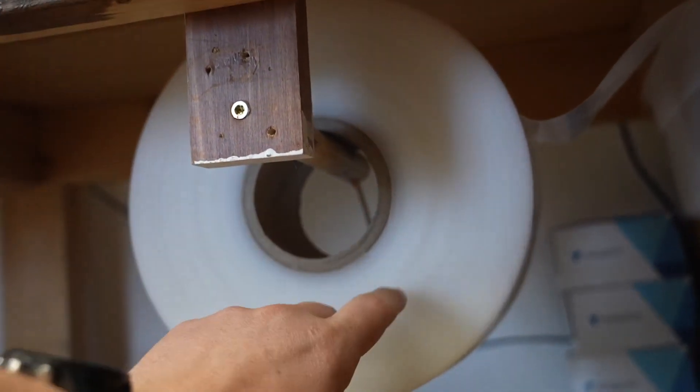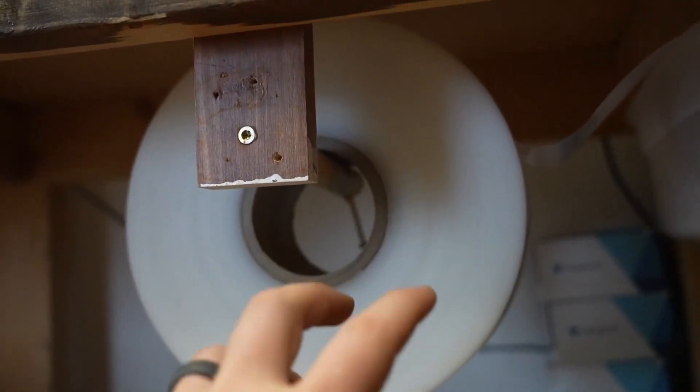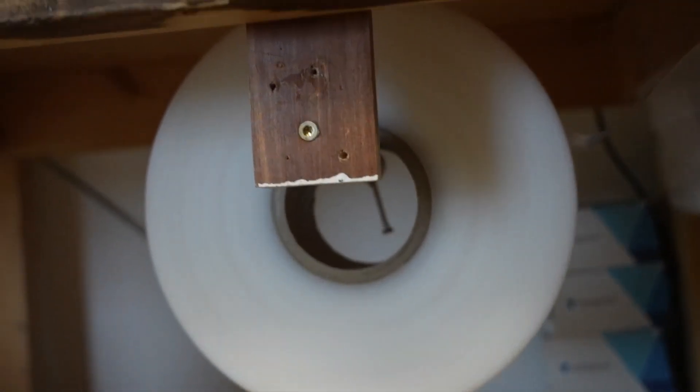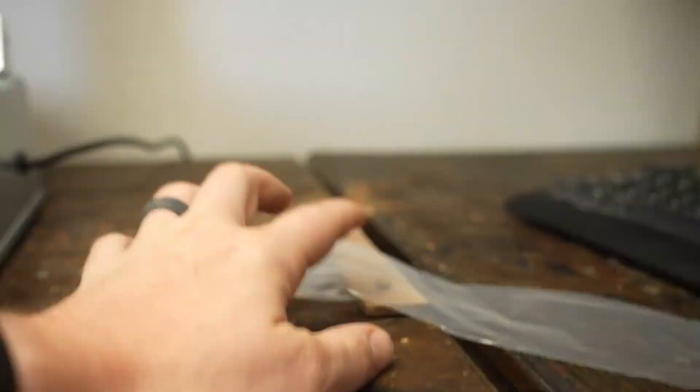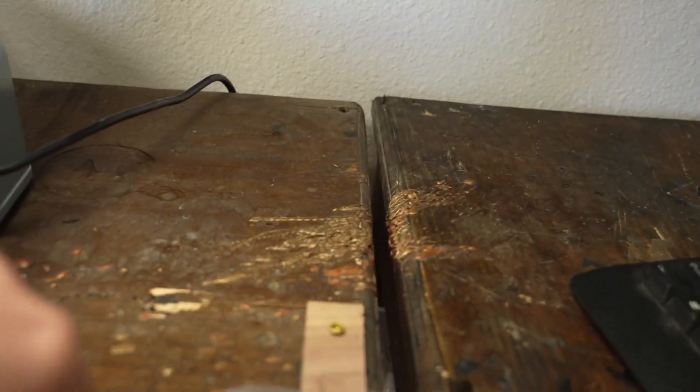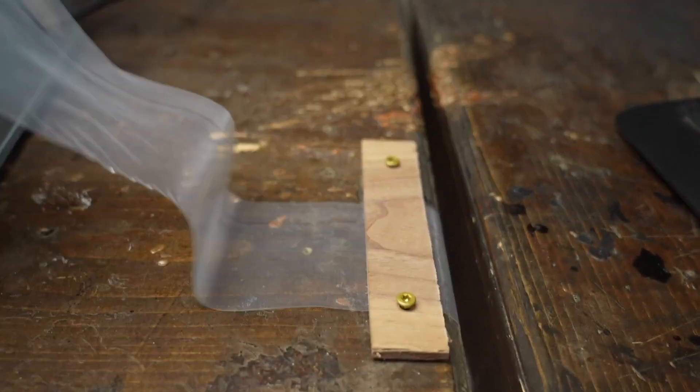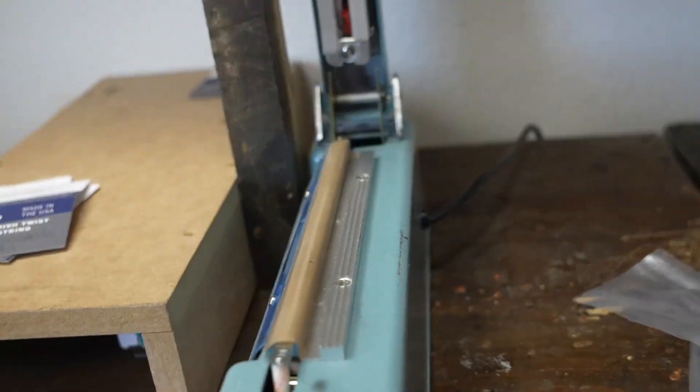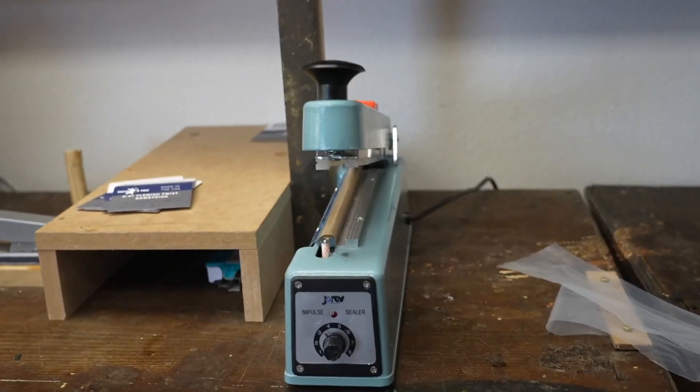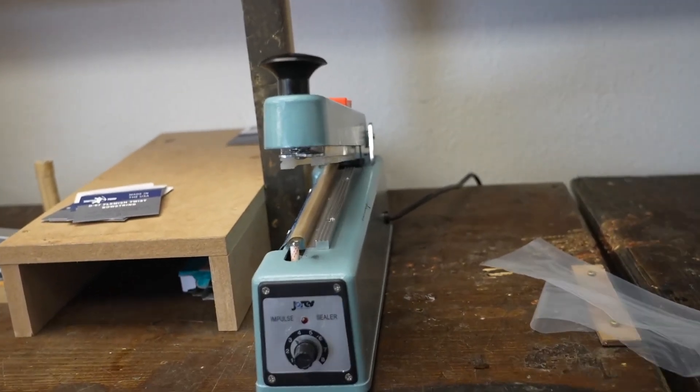What we've done is put a dowel down here with a massive roll of this poly material, the one we use the most, and then we bring that over underneath here. So now we can just pull it out no problem, nice and easy whenever we need to for our heat press. Works out great, no complaints about it, very happy with it.